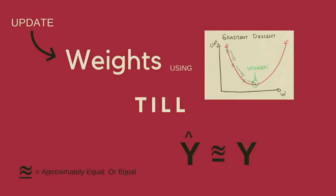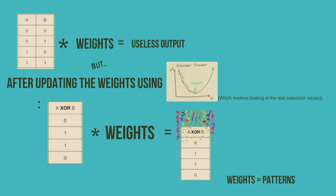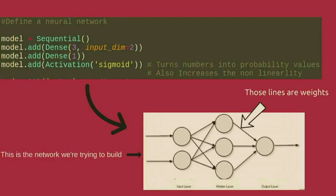After getting the result matrix close to Y by updating the weights, they collect and store patterns from the dataset. You can then use those patterns to predict the XOR value for a completely new example the neural network hasn't seen before. You define your model using the Sequential function, which allows us to feed data into the neural network sequentially, and then use the Dense function to create nodes and weights between them. First we create a dense layer of three nodes with two input features, passing that as an argument.